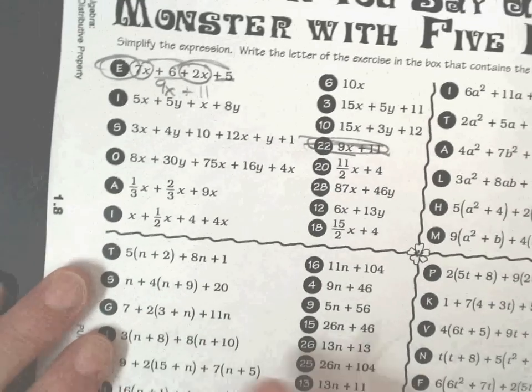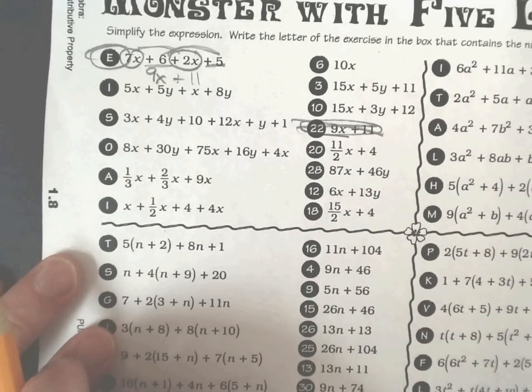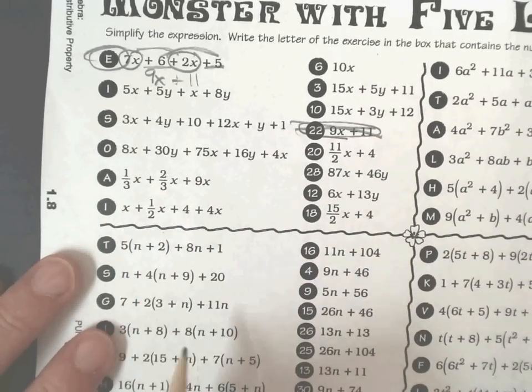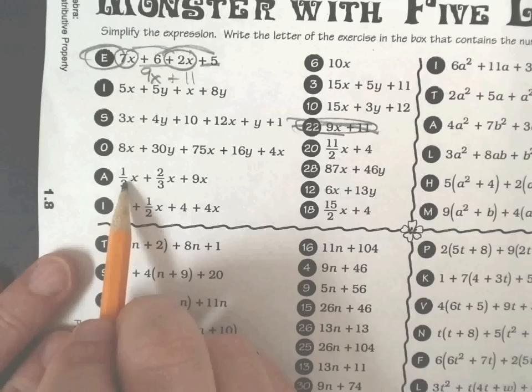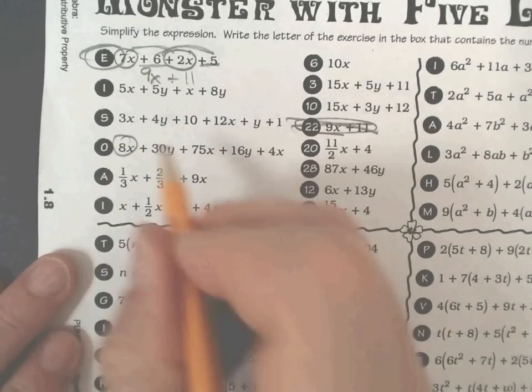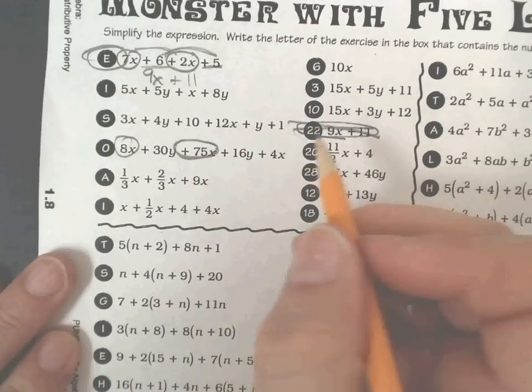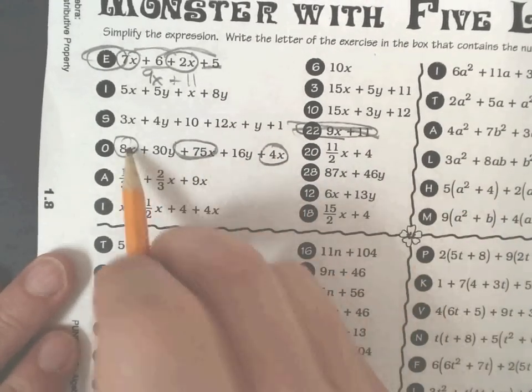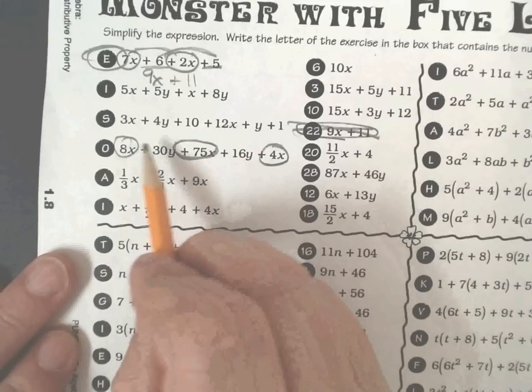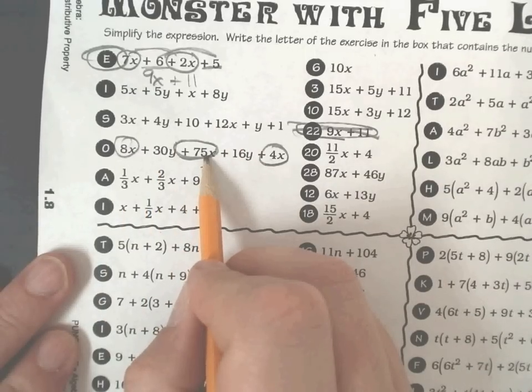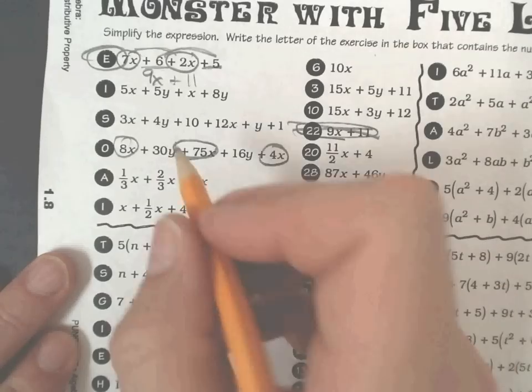All right, let's do one that's a little more difficult. Let's go all the way down here, and then I'll do one with a fraction somewhere else. So I have 8x. There's an x. I have 75x. And I have 4x. Now I have three like terms that I can add together. 8 and 75 is 83x's. 83 plus 4 is 87x's.